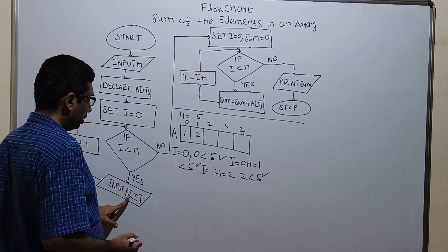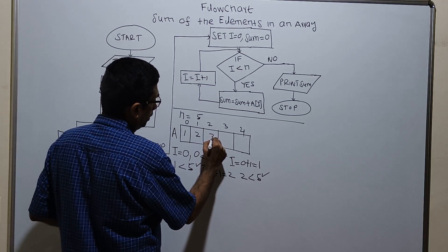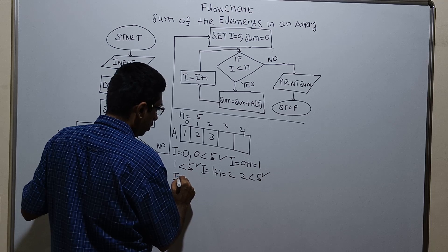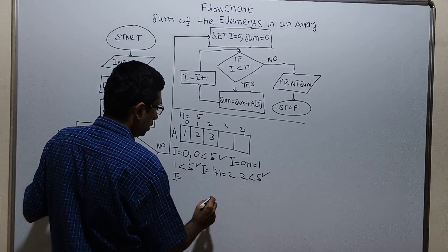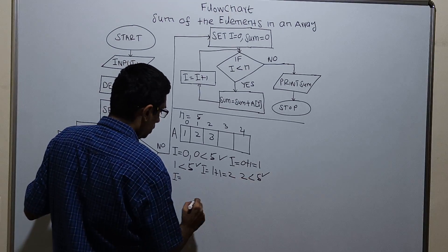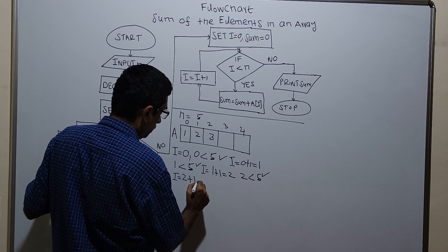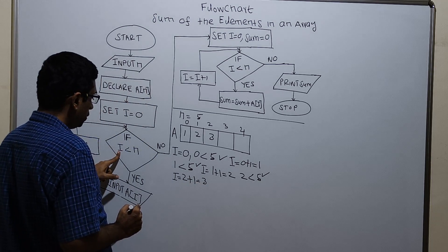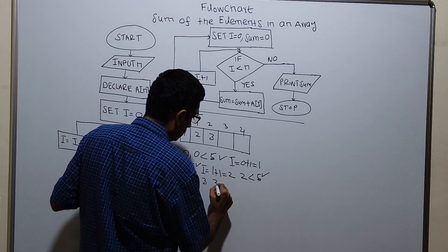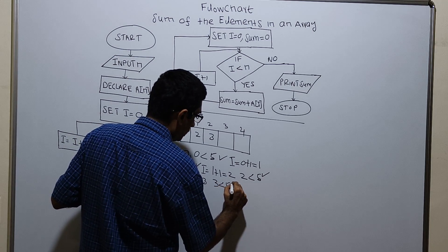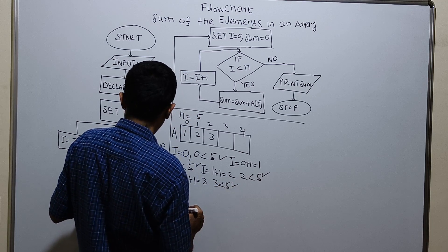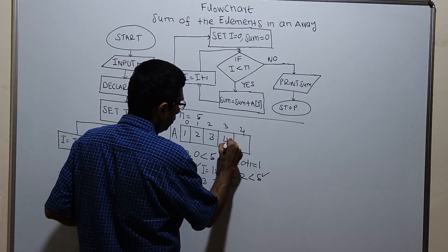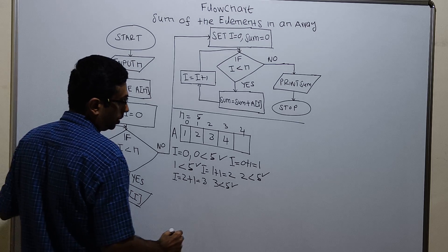Input a of 2, storing value 3. i equal to i plus 1. i equal to existing value of i equal to 2. 2 plus 1 which is equal to 3. I am checking the condition: 3 less than 5, which is true. So input a of 3. I am giving a value 4. i equal to i plus 1.